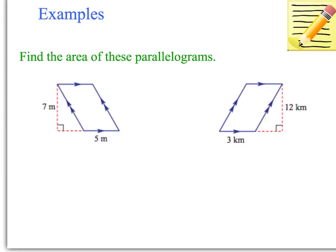Now we just need to do some examples to find the area of these parallelograms. Remember to write area of a parallelogram equals base times height. So we multiply, the base is 5 metres and the height is 7. So 7 times 5 is 35. And remember, the answer must be in square metres or square units. In this case, it's metres.